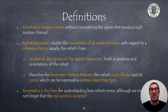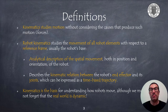Kinematics is the science that studies motion without considering the causes that produce it — that is, the forces that cause it. It only takes into account positions and velocities of elements. In robotics, kinematics allows us to study movement of the robot links with respect to a reference frame. This is an analytical description of the spatial movement of the end effector, both in position and orientation.